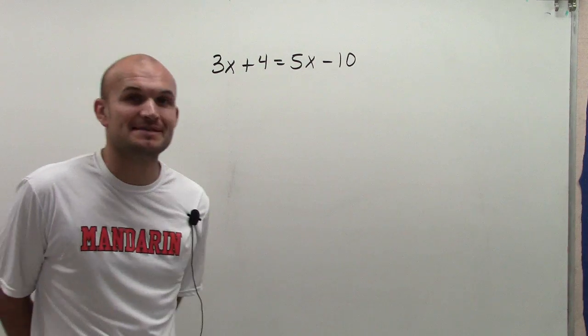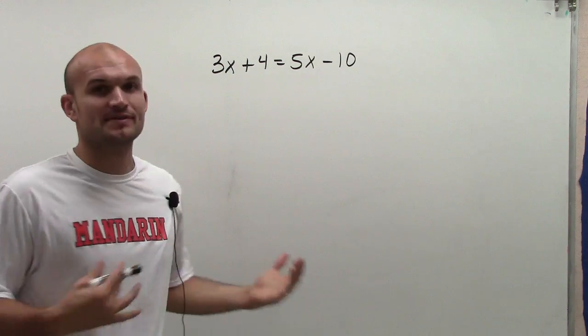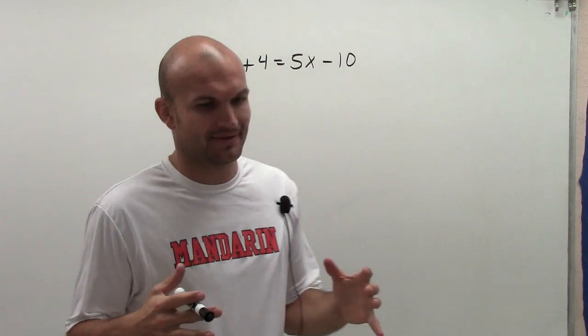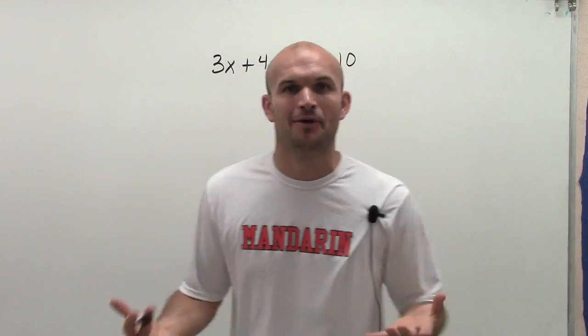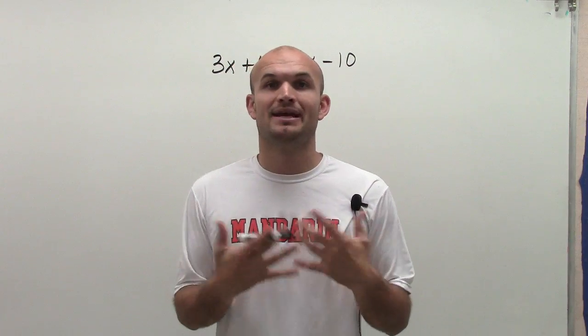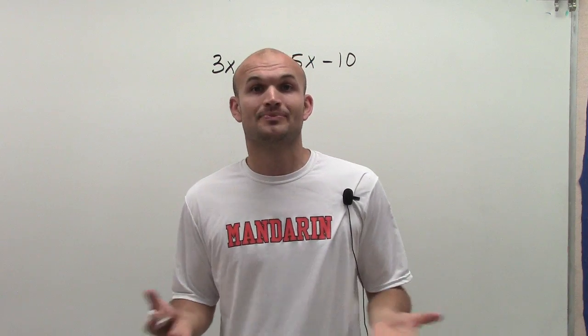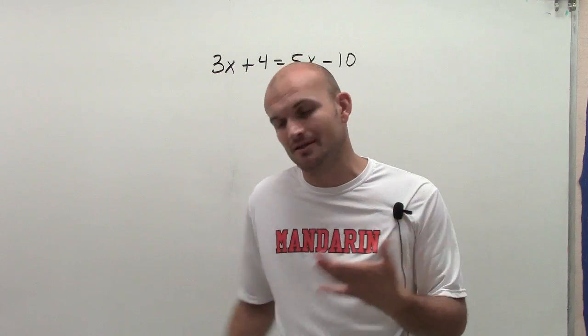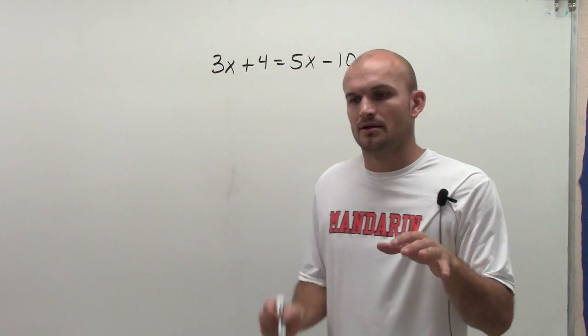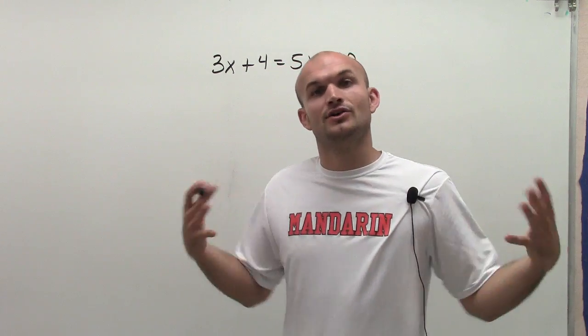I have 3x plus 4 equals 5x minus 10. I need to solve this equation. And when we start dealing with variables on both sides, we have to be aware that we could end up with no solutions at all, infinitely many solutions, or exactly just one solution. So it's just a good idea to understand that. And I've explained a lot of different times when we come up with those situations.